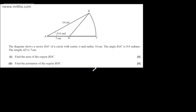This is question number 5. We're told the diagram shows a sector BAC of a circle with centre A and radius 16 centimetres. The angle BAC is 0.8 radians and the length AD is 7 centimetres. In the first part of the question, for four marks, we're asked to find the area of the region BDC.